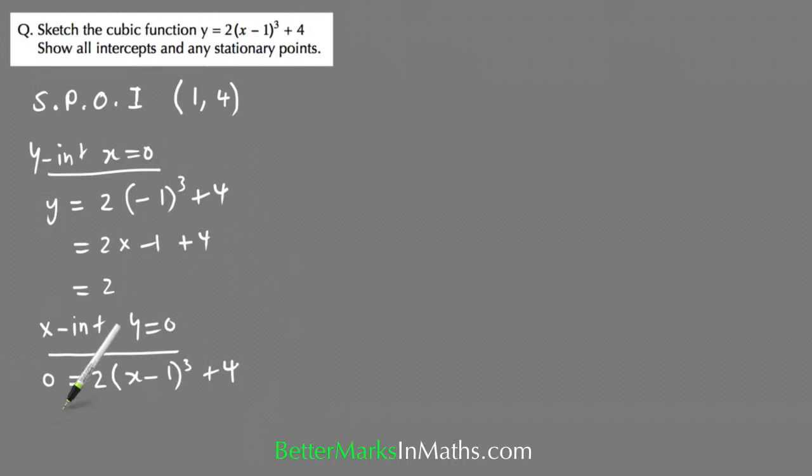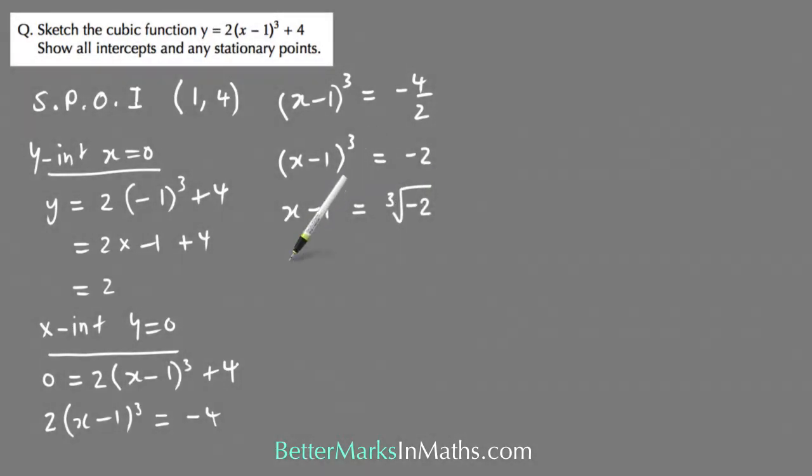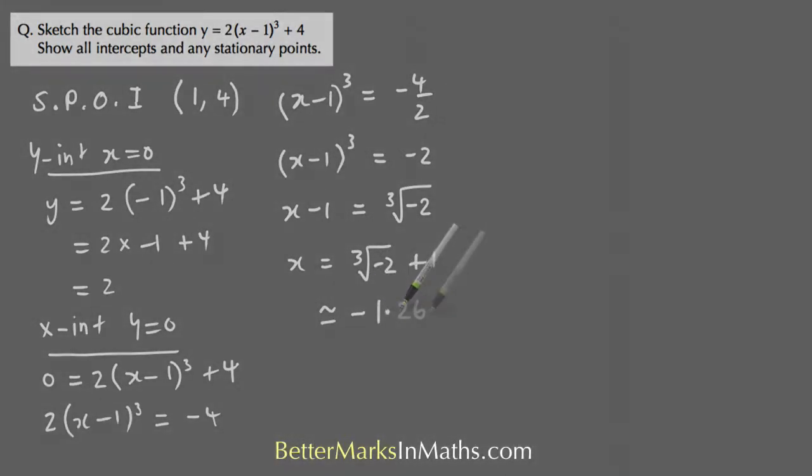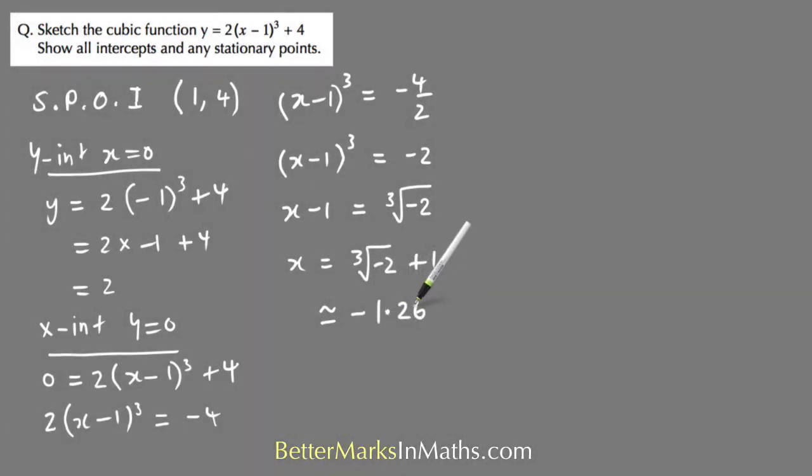Subtracting 4 from both sides, that equals minus 4, and then dividing both sides by 2 you get x minus 1 cubed equals minus 2. Then taking the cube root of both sides, x minus 1 equals the cube root of minus 2. Adding 1 to both sides you end up with x equals the cube root of minus 2 plus 1, and that is approximately equal to minus 1.26.